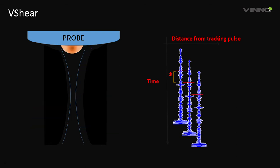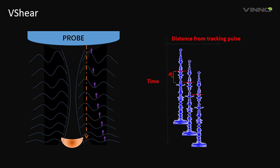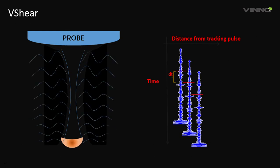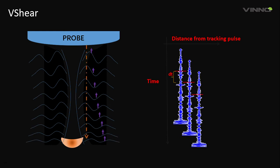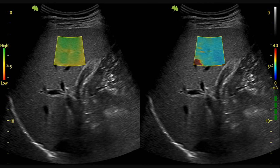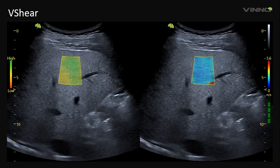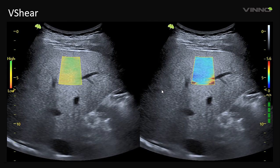These tissue movements in turn produce shear waves. The generated shear waves propagate perpendicular to the direction of the push pulses, typically between 1 to 10 meters per second. Tracking ultrasound pulses — with an average tissue propagation velocity of 1540 meters per second — track the propagating shear waves and estimate their velocity. Stiffer tissues tend to propagate shear waves faster than soft or elastic tissues. The resulting dispersion of shear wave velocity over a 2D area is displayed as a parametric color map on the real-time 2D image, with the shear wave velocity map on the right and the reliability map on the left.